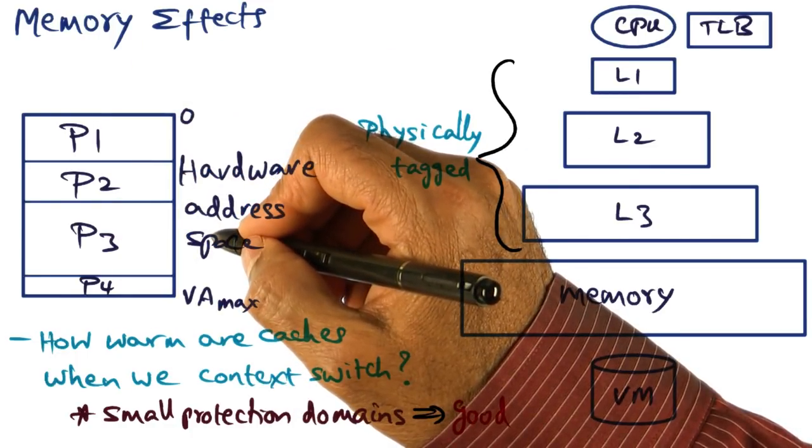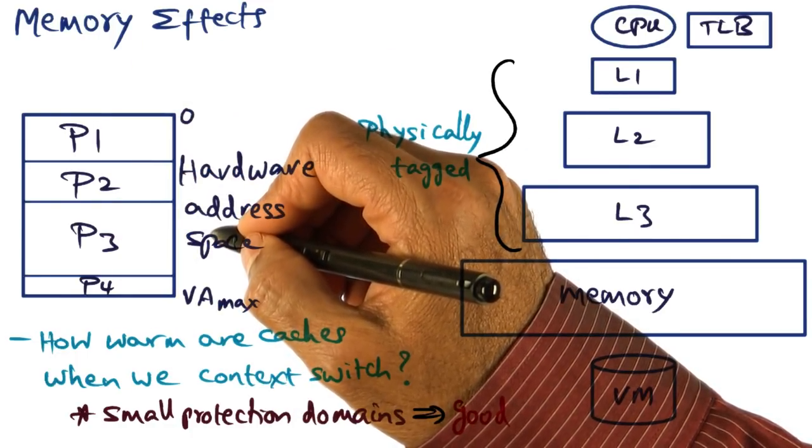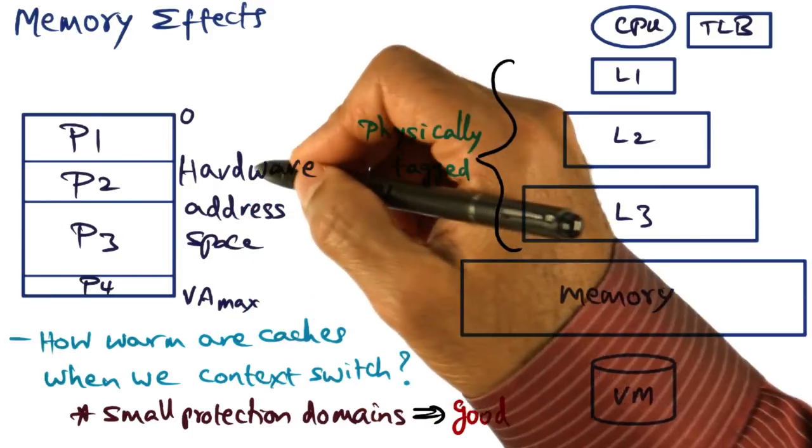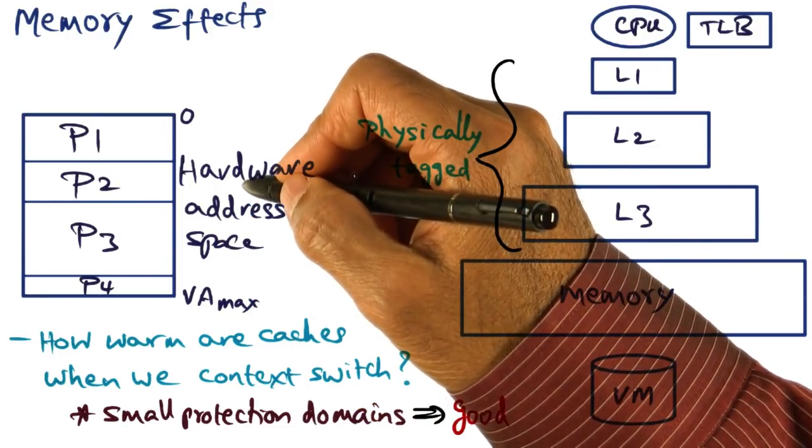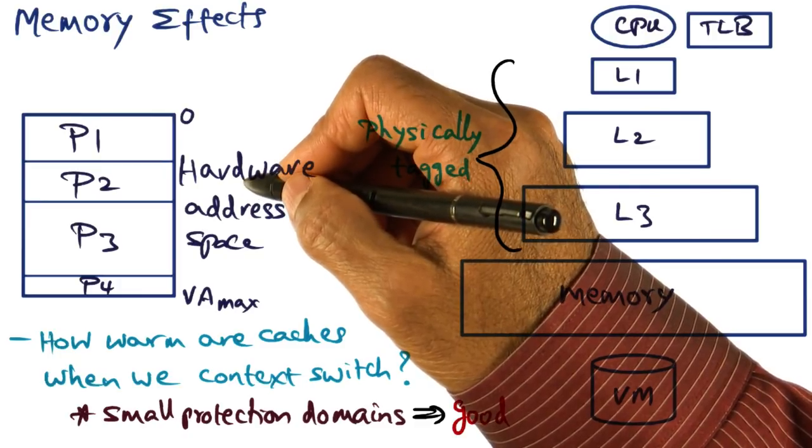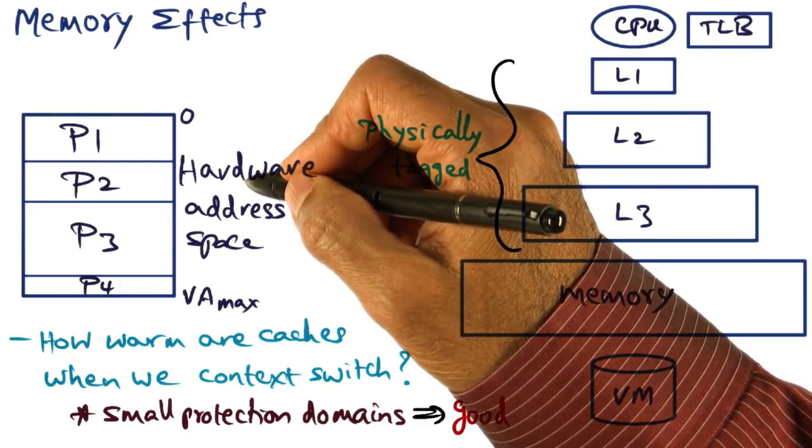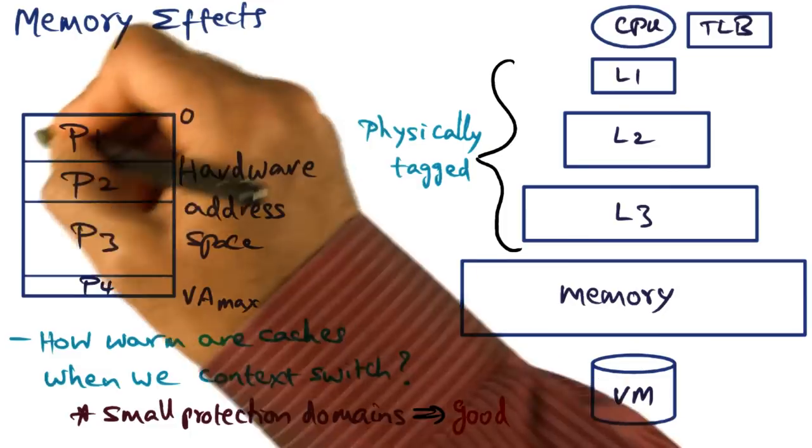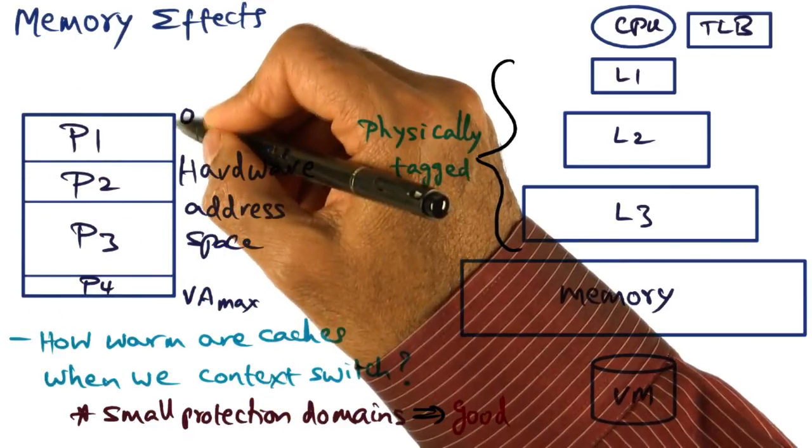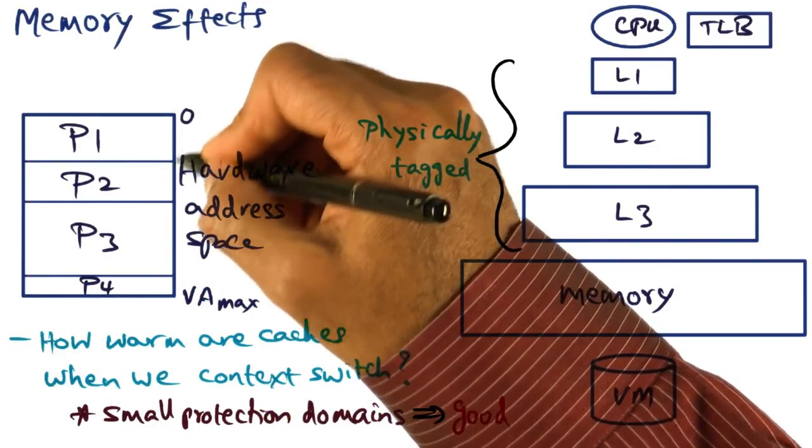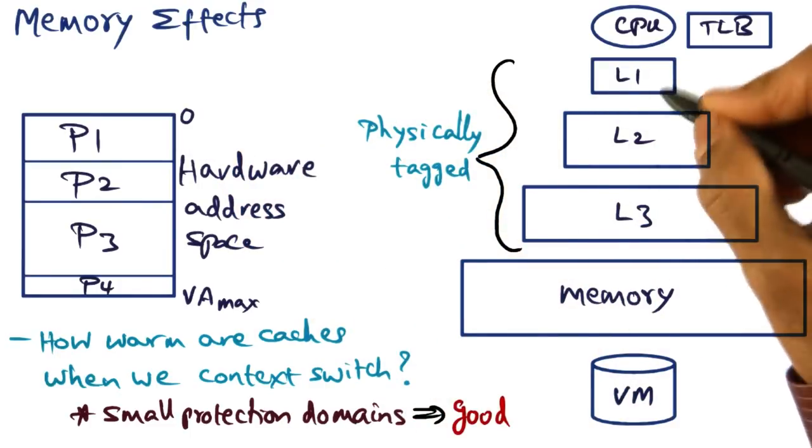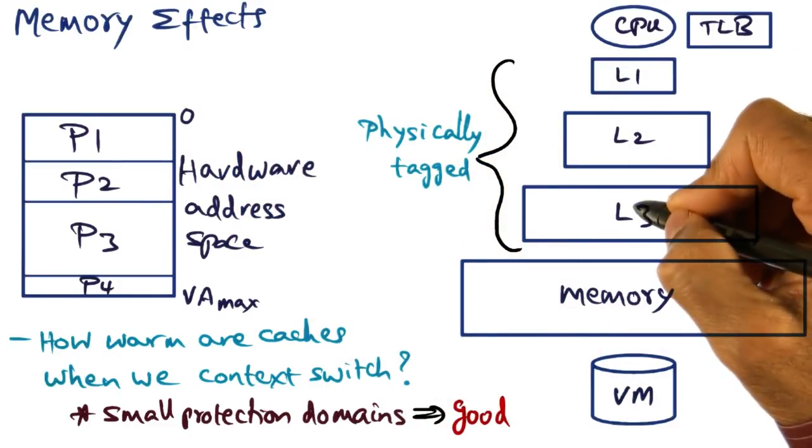So debunking the second myth with respect to address space switching also helps in reducing the ill effects of implicit costs associated with address space switching because the small protection domains occupy only a small memory footprint and therefore occupy only a small memory footprint in the caches as well.